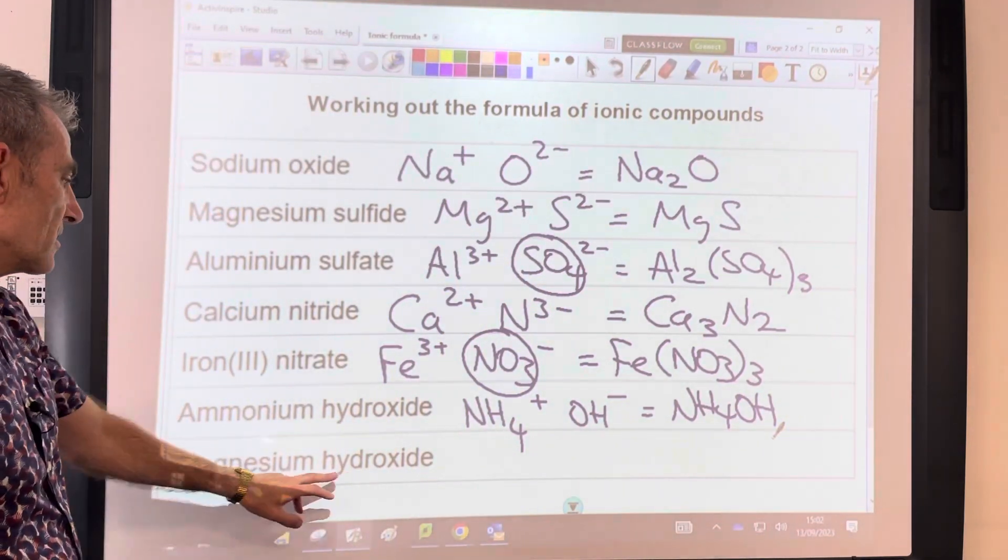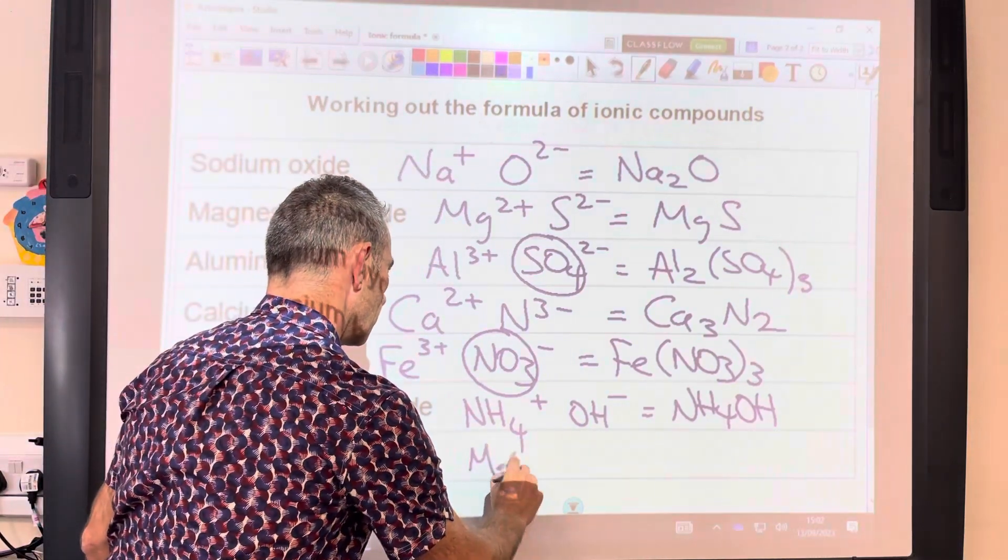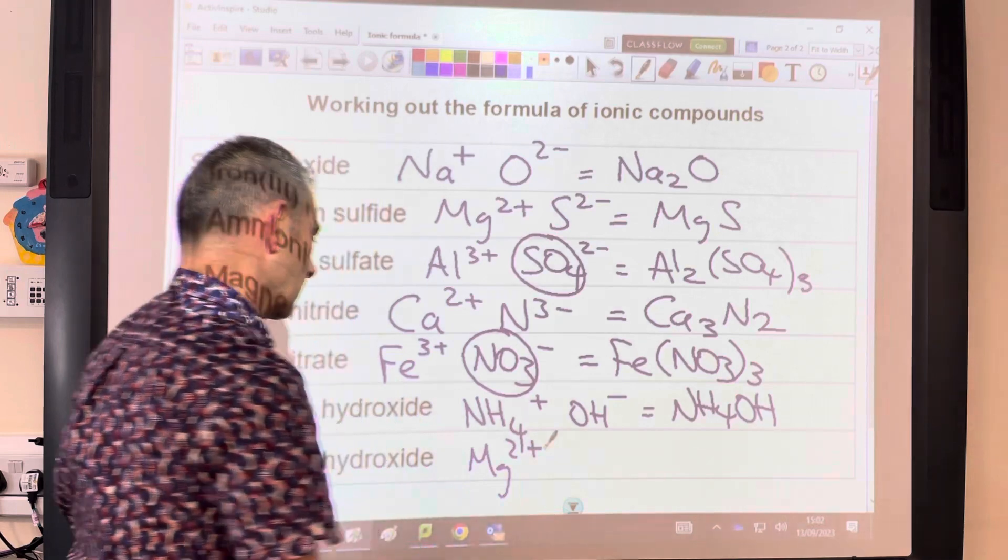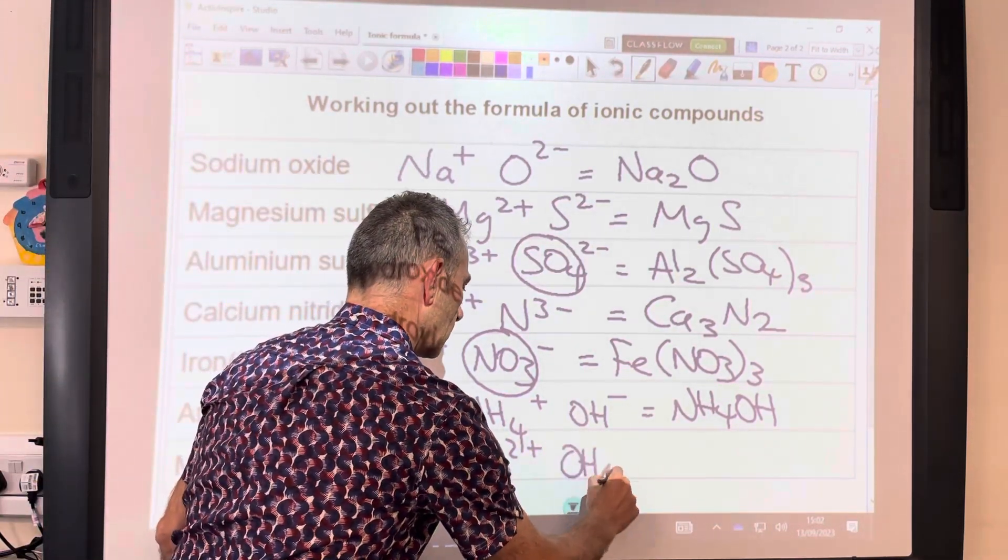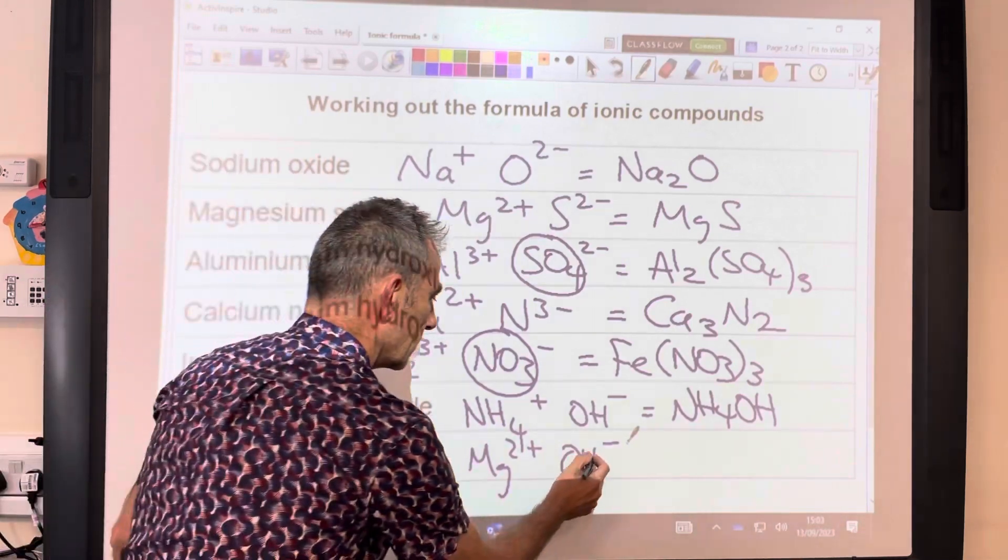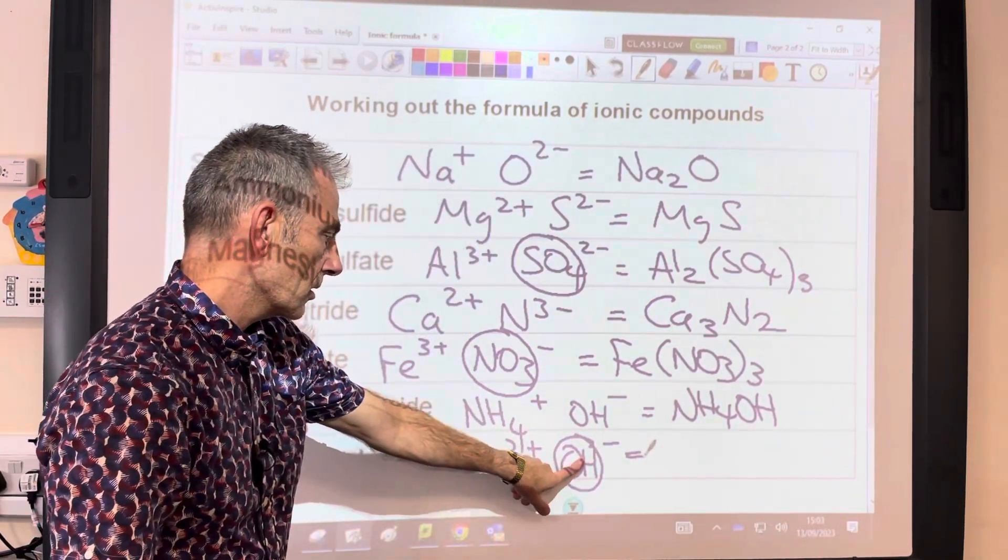The final one is magnesium hydroxide. We've already had the magnesium ion, Mg2+, and we've got the hydroxide ion, OH-. Again, think of that as one thing. Mg(OH)2.